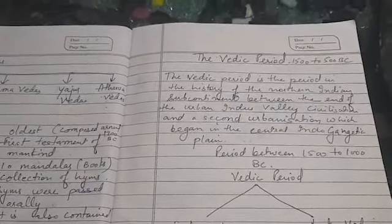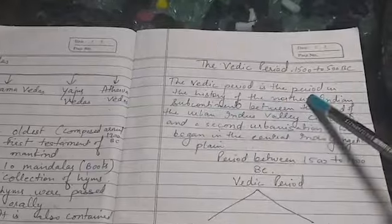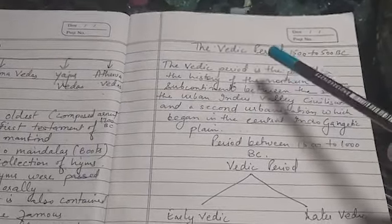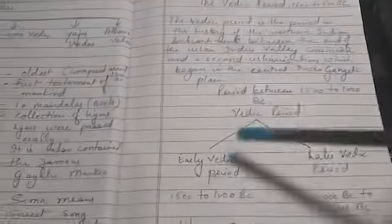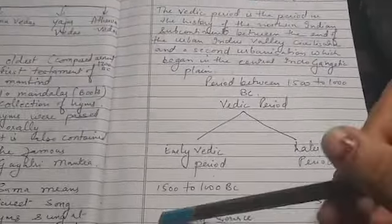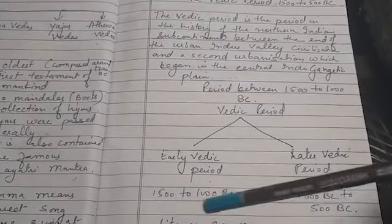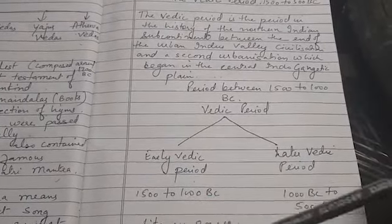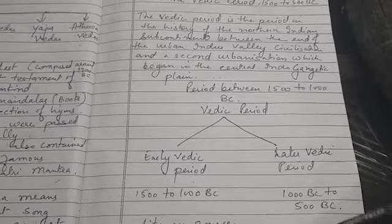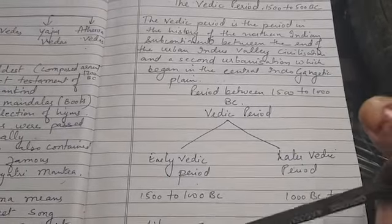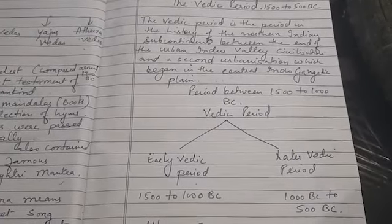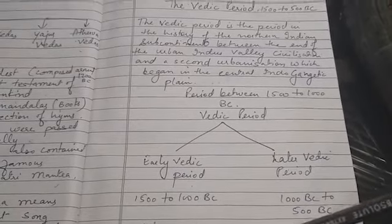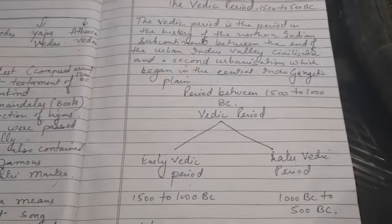From where do we get information about the Vedic period? There are a number of sources available. One of those sources is literary sources. Under the literary sources, the principal literary source of this period are the Vedas.